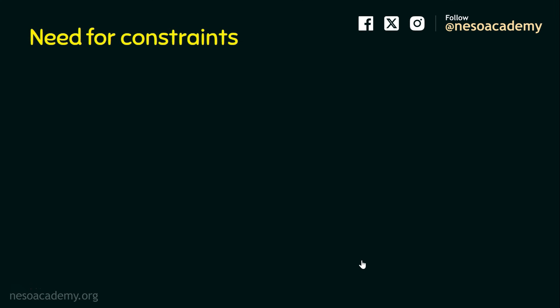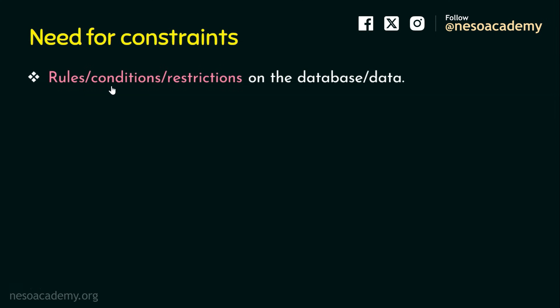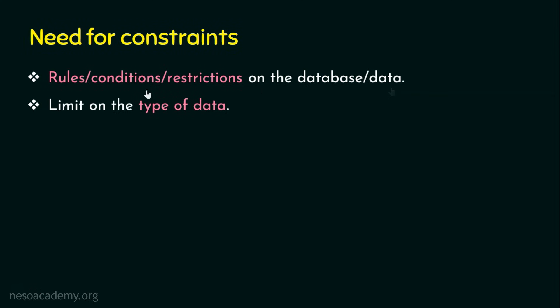First, we will focus on why we need constraints. We need to enforce certain rules, conditions, or restrictions on the database or on the data. Once we enforce some rules or conditions on the database, it limits the type of data that are actually stored. For example, if we enforce a constraint that role number should not be empty, then when we attempt to insert a null value to the role number, the database will not accept that insert operation. These constraints are executed before any insert operation is carried out on the database.